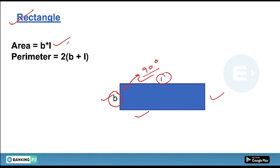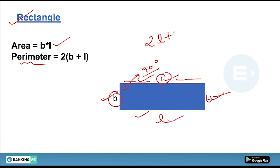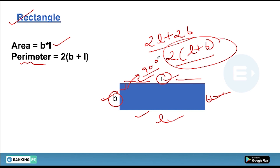An important fact about perimeter: for any figure — rectangle, square, rhombus, or any other — you don't need to memorize separate formulas. Perimeter simply means the sum of all boundaries. For a rectangle with sides L, B, L, B, you add them up to get 2L + 2B, or 2(L + B). Keep your basic concepts clear and you can crack the exam in the first attempt.